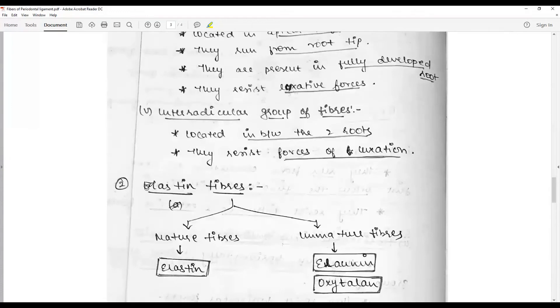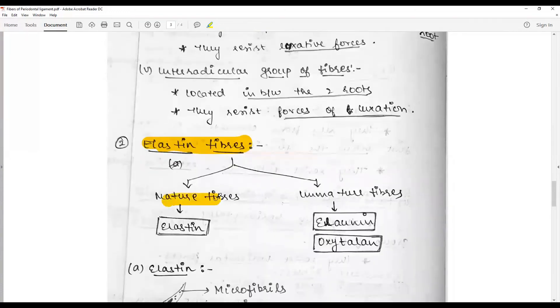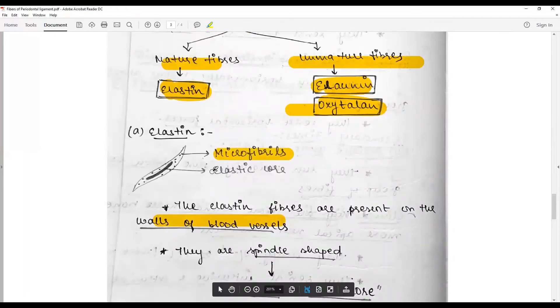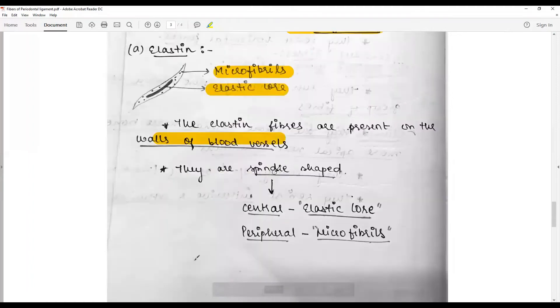Other types of fibers present are elastin fibers, which may contain mature or immature fibers. The mature fibers are elastin, the immature fibers are euline and oxytalin. Elastin consists of spindle-shaped cells present in the walls of blood vessels only in the PDL. They consist of an elastic core and microfibrils with a spindle-shaped central elastic core and peripheral microfibrils.